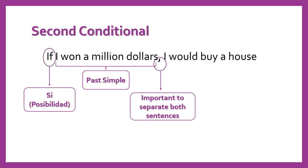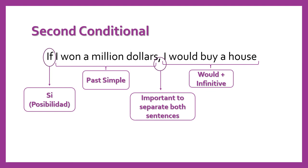Next, and very important, don't forget the comma, because it is important to separate both sentences. Also we can move these sentences because of the comma. And finally we have a sentence with the modal verb 'would', followed by an infinitive verb — in this case 'buy'.